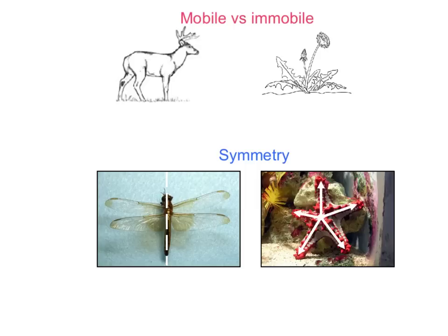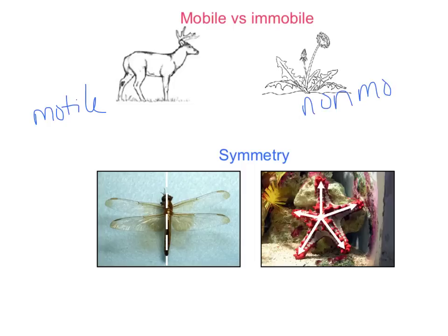The last terms are mobile versus immobile, which you may also see as motile versus non-motile — same thing. They either move or they don't. If they're mobile or motile, they can move; if they're immobile or non-motile, they don't move.